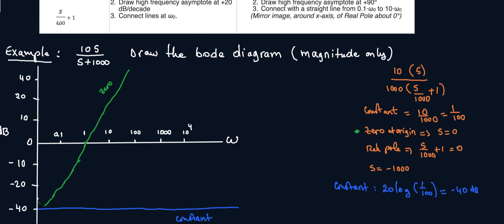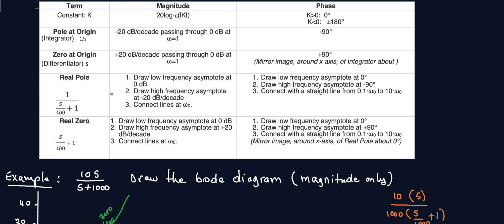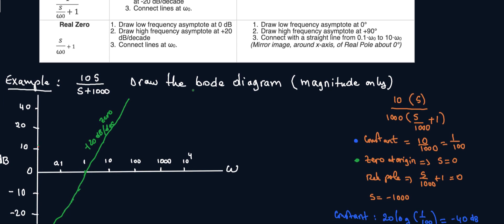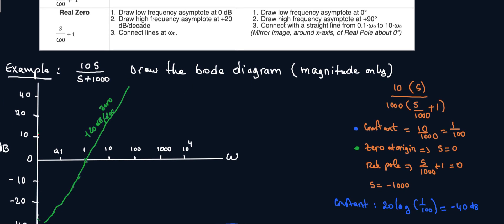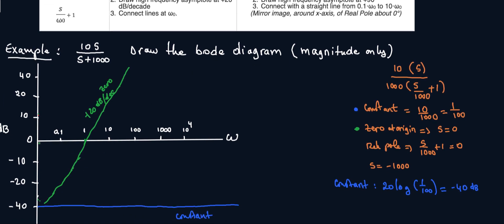So my constant is this one, my zero at origin. So this is plus 20 dB per decade. And that's what we have here. Plus 20 dB per decade passing through zero dB at omega equals one, omega equals one passing through zero dB plus 20 slope, 20 slope.